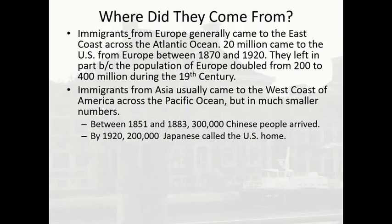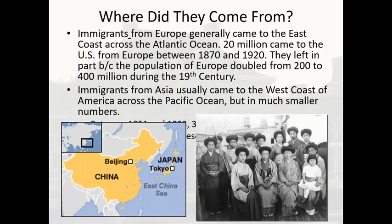Immigrants from Asia usually came to the west coast of America across the Pacific Ocean, but in much smaller numbers. Between 1851 and 1883, 300,000 Chinese people arrived, and by 1920, 200,000 Japanese people called the U.S. home. We've talked a lot in class about Chinese immigrants coming to work in the United States, often on railroads, and their contribution to the transcontinental railroad. Here you can see a basic map of China and Japan — two very different countries that share some of the same traditions but are also very unique in their own ways.